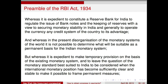Here is the preamble of the RBI Act, designed from 1914 to 1934 and enacted in 1934. Read the second paragraph: 'In the present disorganization of the monetary systems of the world it is not possible to determine what will be suitable as a permanent basis for the Indian monetary system, but whereas it is expedient to make temporary provision...' So in 1934 the RBI Act was designed as a temporary provision. That may have been a wise view in 1934, but it is catastrophically wrong in 2013.